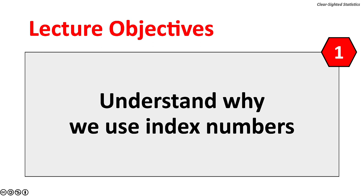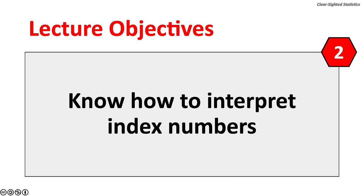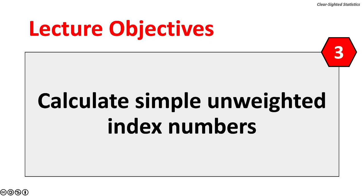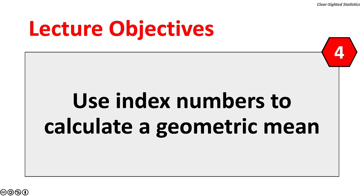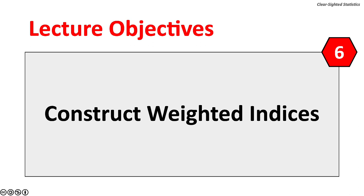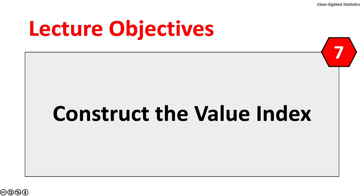This lecture has eight objectives. One, understand why we use index numbers. Two, know how to interpret index numbers. Three, calculate simple unweighted index numbers. Four, use index numbers to calculate the coefficient of variation. Five, use index numbers to calculate the geometric mean. Six, construct a variety of weighted indices. Seven, construct the value index.